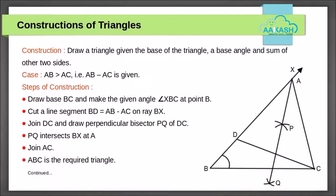Draw base BC and draw an angle XBC at point B. Cut a line segment BD on ray BX such that BD is equal to the sum of the two sides other than the base. Join DC and draw its perpendicular bisector PQ. Say it intersects BX at point A. Join AC, then ABC is the required triangle.